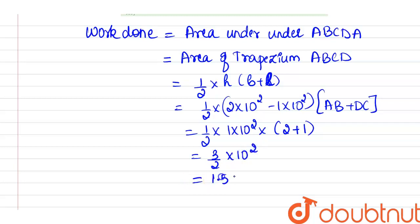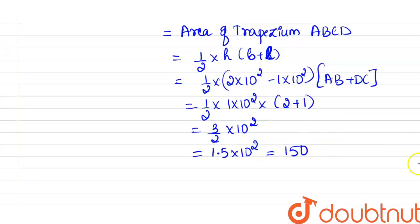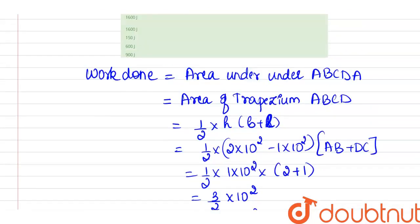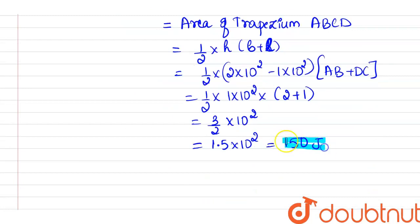to the power 2. So 1.5 into 10 to the power 2 is 150J. So according to the given option, the correct option is going to be the second option. So 150J is the work done in the cyclic process. Thank you.